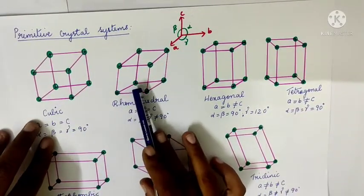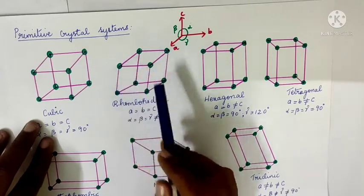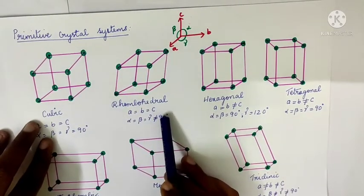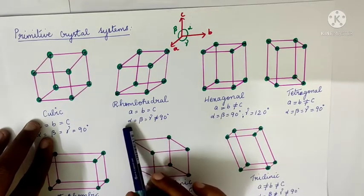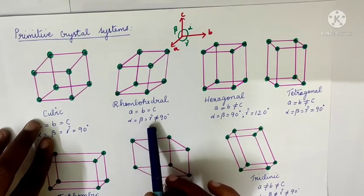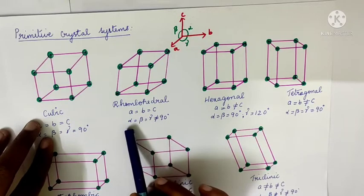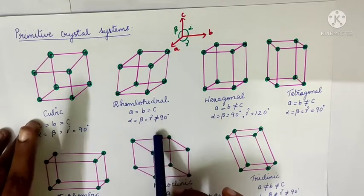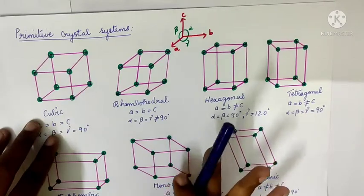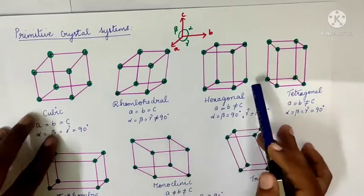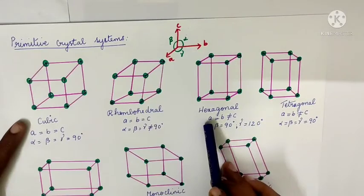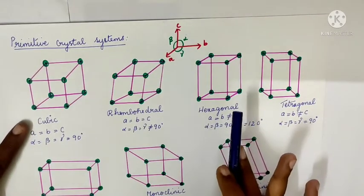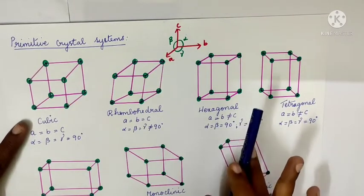For rhombohedral: a is equal to b is equal to c — all edge lengths are the same — and alpha, beta, and gamma angles are all equal, but they are not equal to 90 degrees.